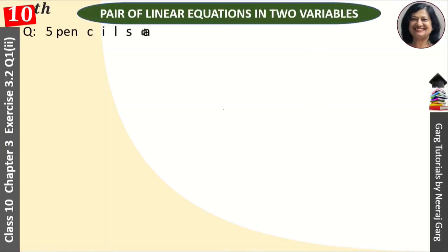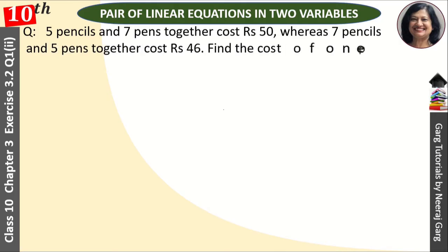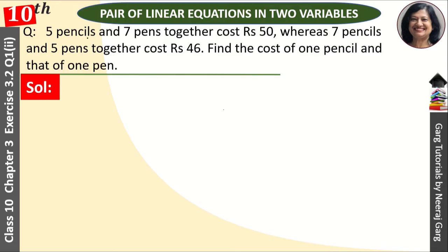Hi, this is Neeraj Garg and you are watching Class 10th, Chapter 3, Pair of Linear Equations in Two Variables, Exercise 3.2, question number 1, second part. 5 pencils and 7 pens together cost rupees 50, whereas 7 pencils and 5 pens together cost rupees 46. Find the cost of one pencil and that of one pen.